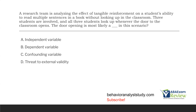The independent variable is the thing we're manipulating. The dependent variable is affected by the independent variable. Extraneous variables are all the hundreds of other variables in the environment that we have to attempt to control for. It's unrealistic to think we can control for all these variables. Sometimes those variables affect the dependent variable and they become confounds. In this case, we are looking to analyze students reading multiple sentences in a book without looking up in the classroom. However, when the door opens, they look up anyway, which isn't part of our experiment. The looking up as a result of the door opening is now confounding the experiment.